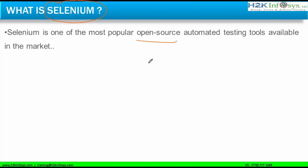Open-source means it is completely free. You don't have to pay any subscription fee or buy any license for it. You just go to the Selenium website, download it, and start working with it. That is what we call open-source.